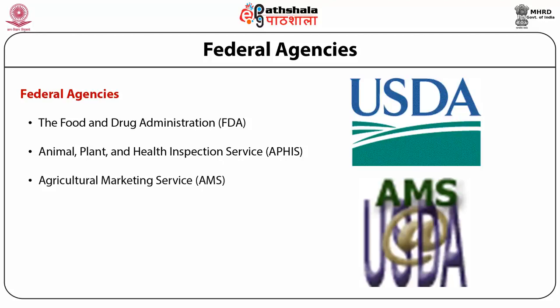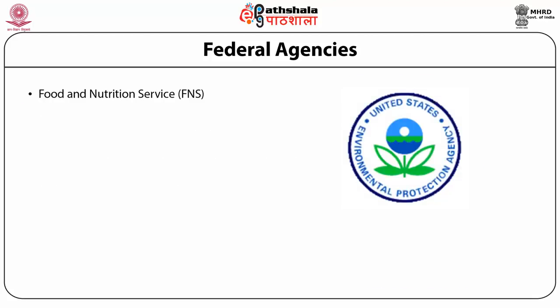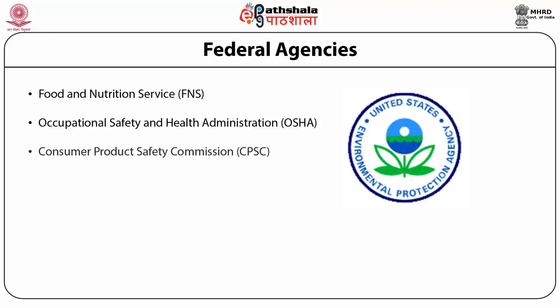The Food and Nutrition Service (FNS) checks the nutritional quality of food. The Occupational Safety and Health Administration (OSHA) checks occupational labor conditions that affect food quality. Others include the Consumer Product Safety Commission (CPSC) and the Environmental Protection Agency (EPA).